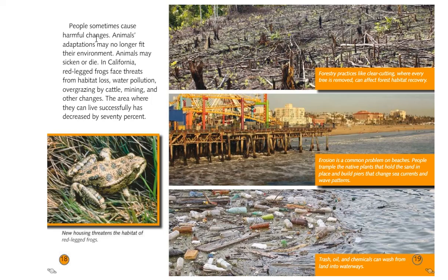People sometimes cause harmful changes. Animals' adaptations may no longer fit their environment, and animals may sicken or die. In California, red-legged frogs face threats from habitat loss, water pollution, overgrazing by cattle, mining, and other changes — the area where they can live successfully has decreased by 70%. Forestry practices like clear-cutting, where every tree is removed, can affect forest habitat recovery. Erosion is a common problem on beaches — people trample the native plants that hold the sand in place and build piers that change sea currents and wave patterns, disrupting the ecosystem living on the shore.